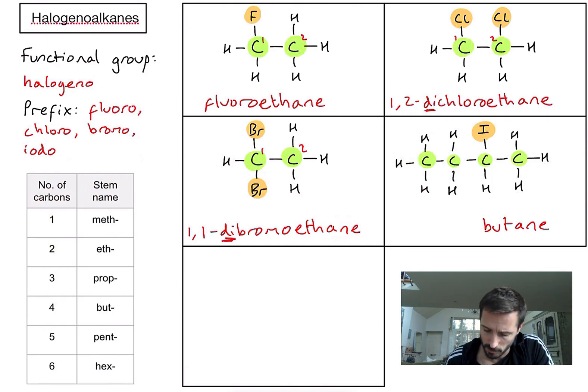If I numbered my carbons left to right (1, 2, 3, 4), the iodine is on the third carbon. However, we always want to number carbons with the functional group as close to the beginning as possible. So I need to number from right to left, which puts the iodine on the second carbon. So we have 2-iodobutane.